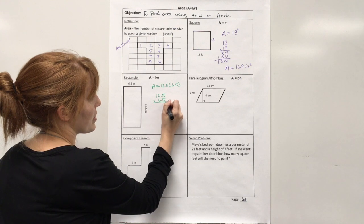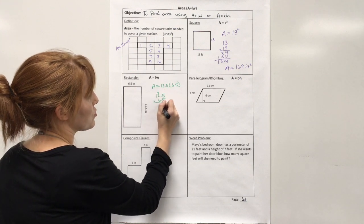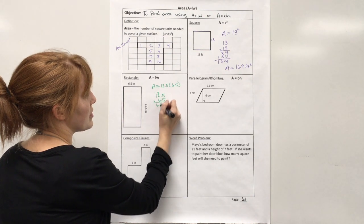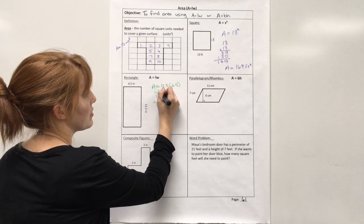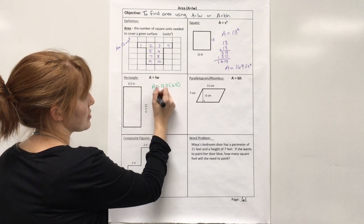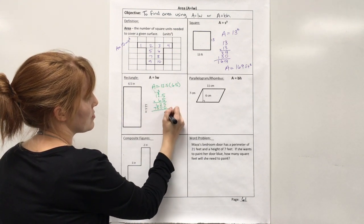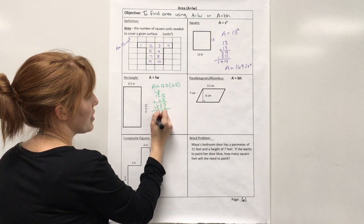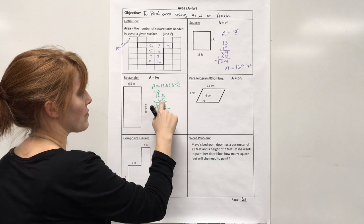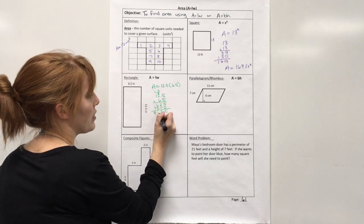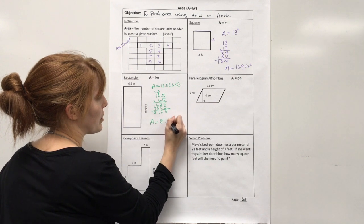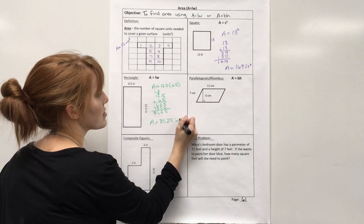12.5 times 6.5, that's 25, 10, 11, 12, 5, 6, put to your placeholder. That's 30, 12, 13, 14, 15, 6, 7, so 5, 2, that's 11, that's 8. And then don't forget your decimal. There's one, two digits after decimals, so 1, 2. Area equals 81.25 inches squared.